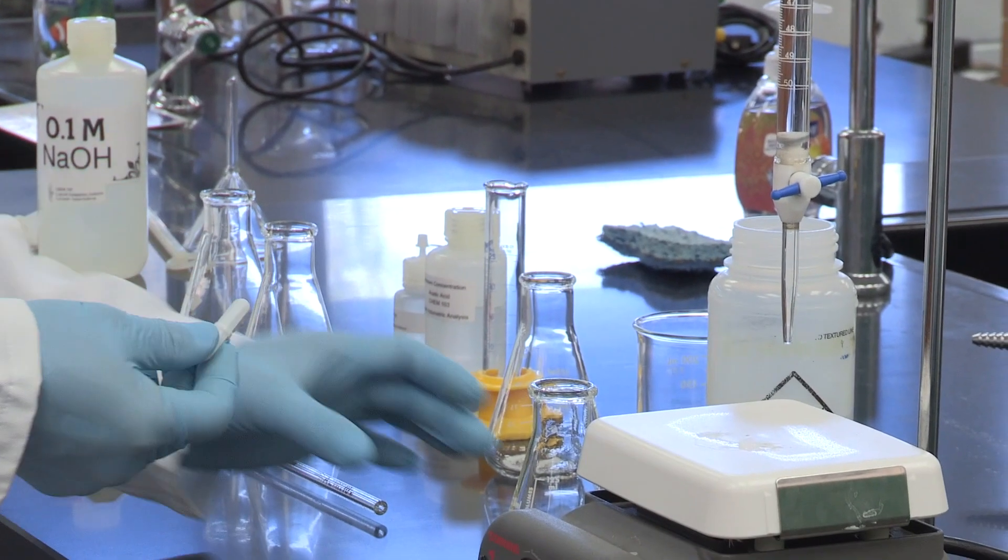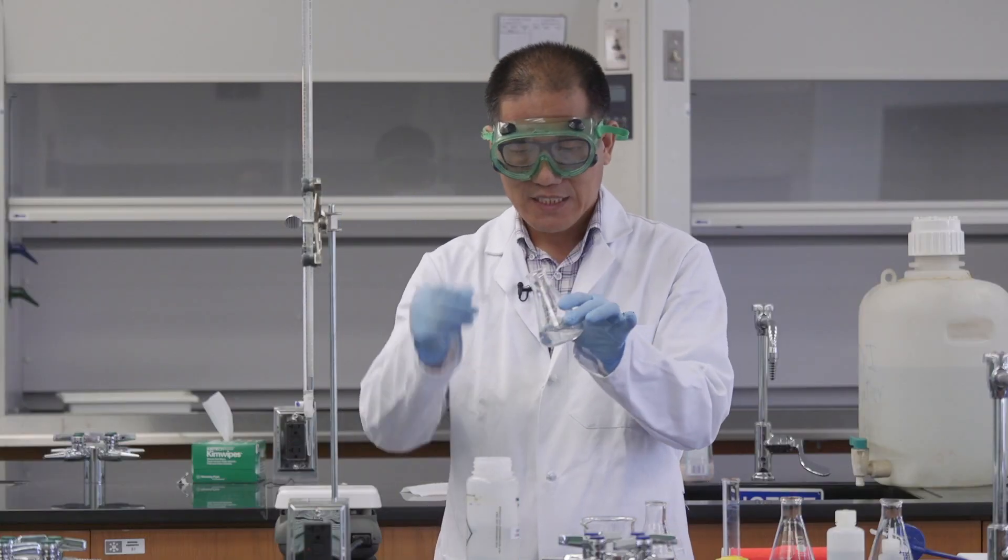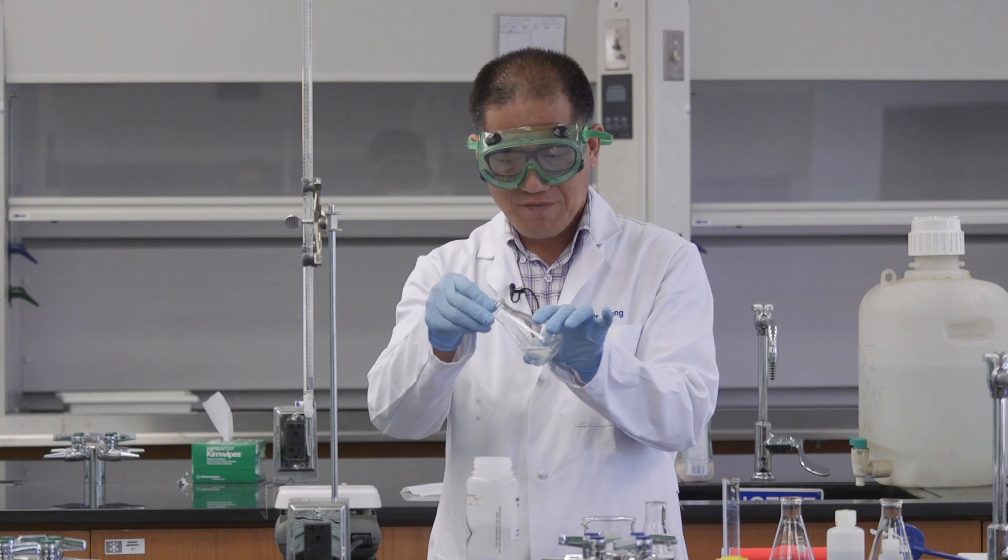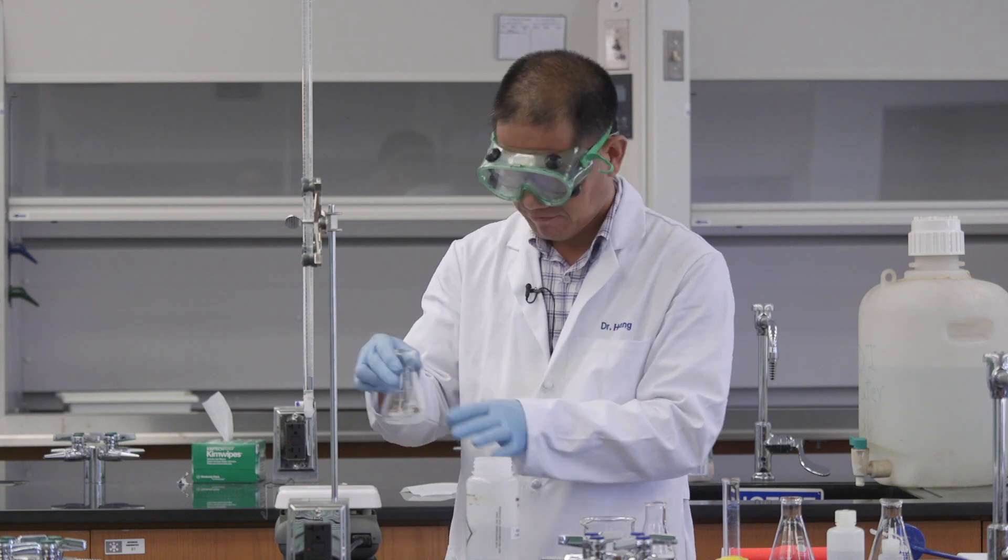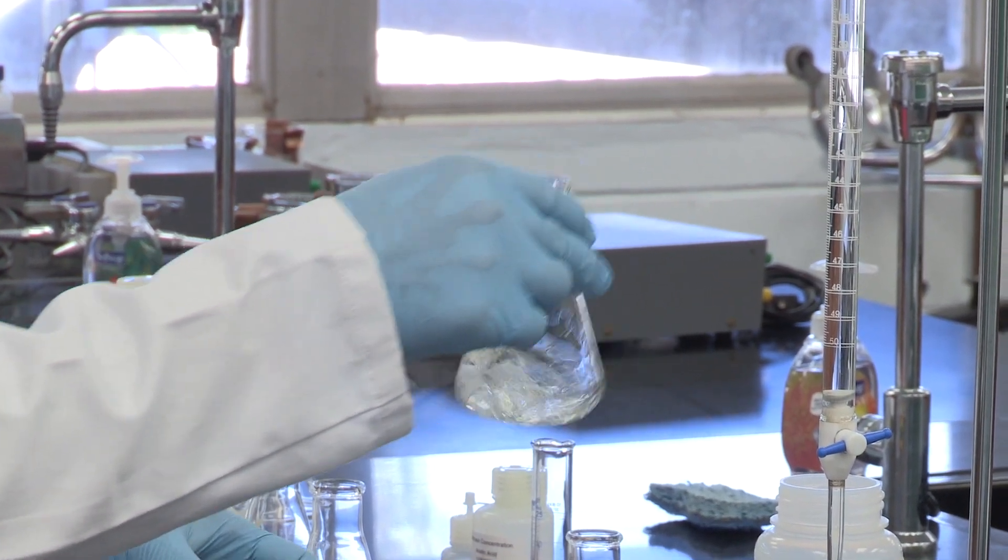Now I'm going to add the stir bar into this Erlenmeyer flask. I want to stir that so the dissolving can be very fast. At the same time, I can swirl this so it will dissolve faster.